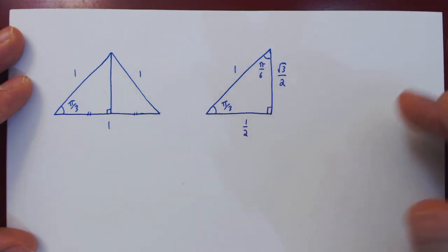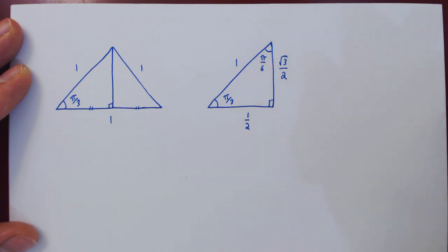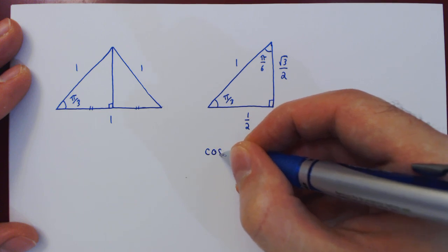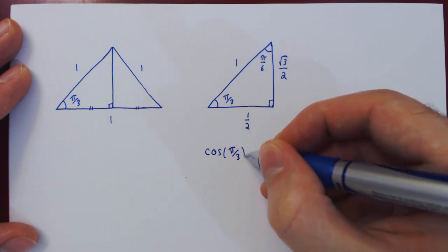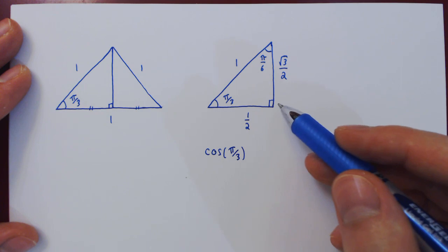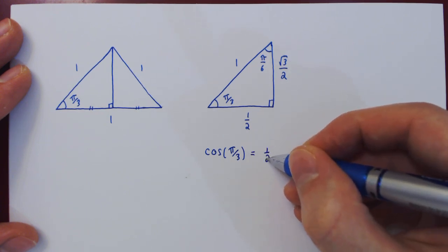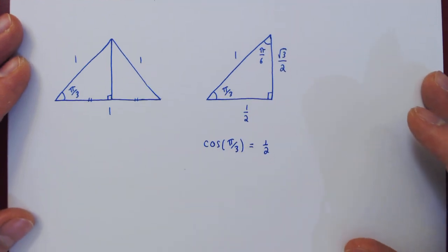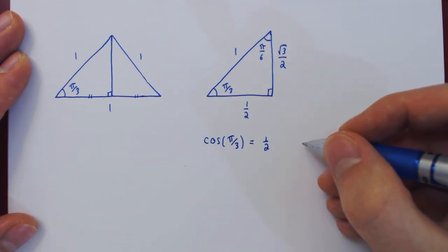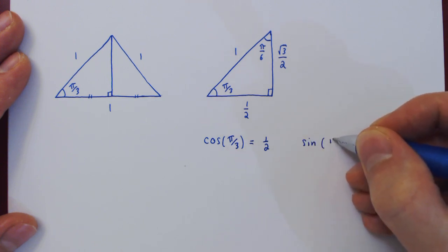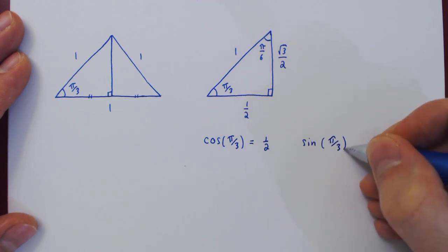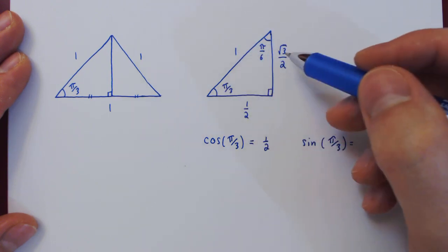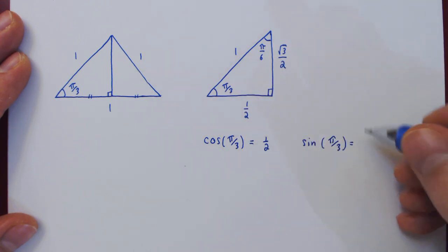Let's now use this triangle to first look at the exact values of sine and cosine at π/3. Cos of π/3: cosine is the adjacent, 1/2, divided by the hypotenuse 1. So cos(π/3) is 1/2. What about sin(π/3)? The sine is the opposite side over the hypotenuse, which is 1. So sin(π/3) is √3/2.